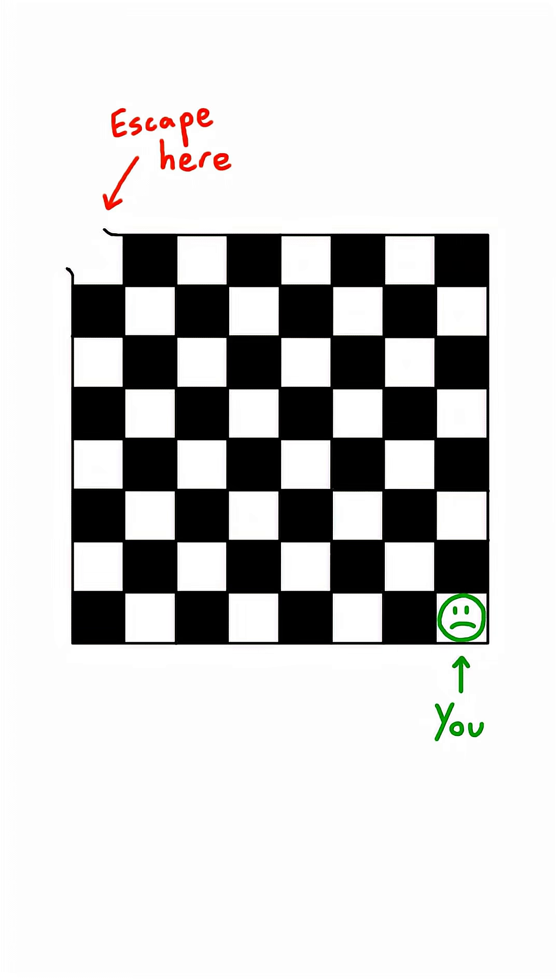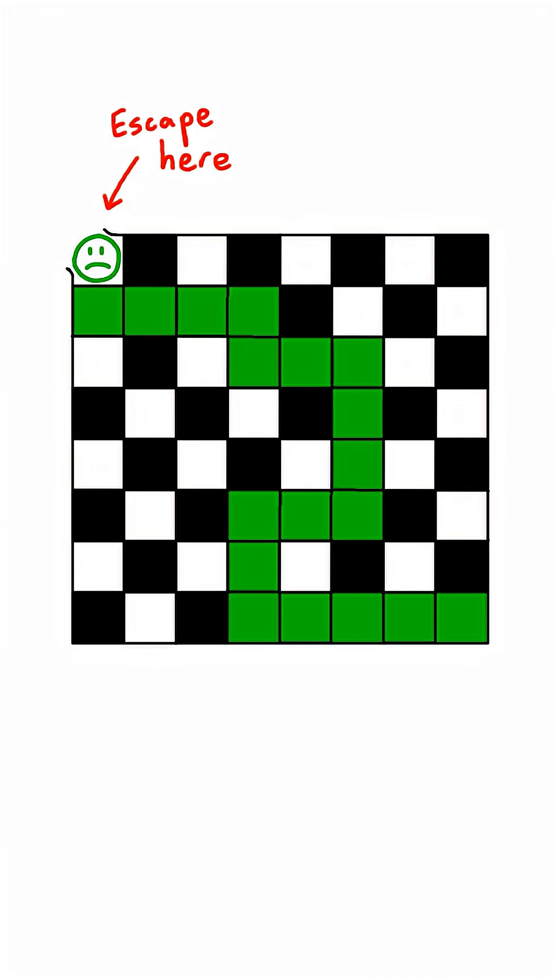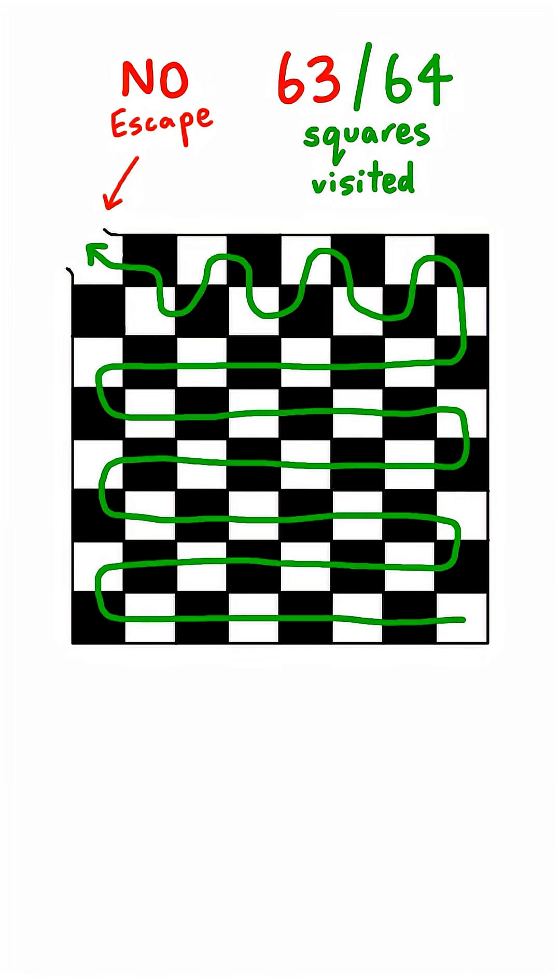Third fact: a mathematician traps you on a large chessboard where you can only move up, down, left, or right, not diagonally. Your goal is to escape, but before you do, you must visit each square exactly once. Turns out, this is impossible. No matter which path you choose to take, you'll either miss a square or visit one twice.